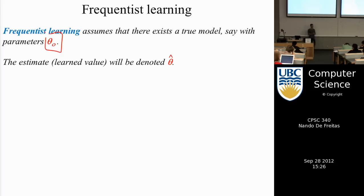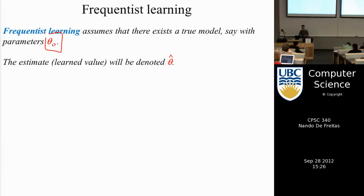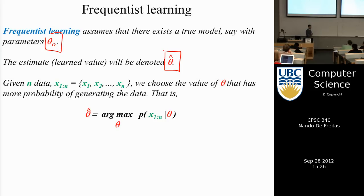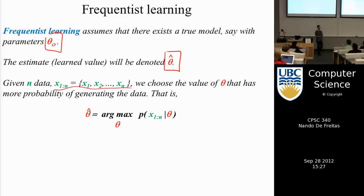We then try to approximate the truth given some observations with an estimate, theta hat. We don't know what the truth is — there is a true bias. You observe me flipping a coin, and you don't know how much lead I put on one side, so instead you guess it — and the guess is denoted with a hat. Maximum likelihood, given a dataset of n coin tosses x1 to xn, tries to find the theta that makes those observations most probable. The arg max is theta hat — the argument that maximizes the likelihood.